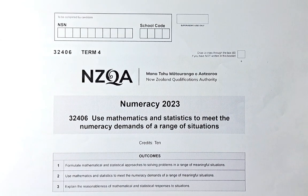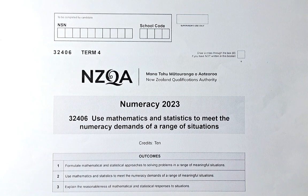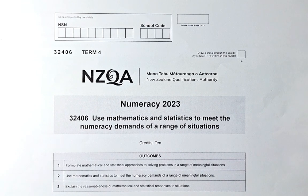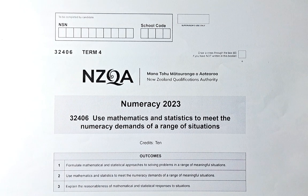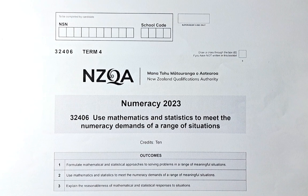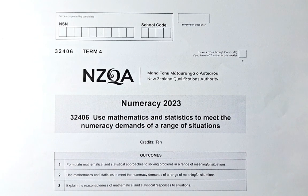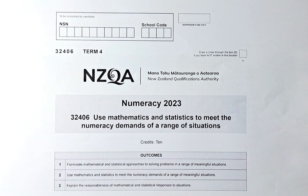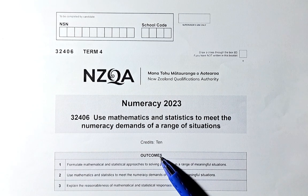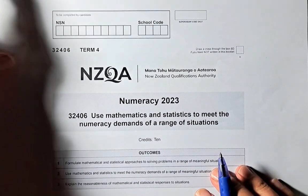Good day! In this video, we are going to do the last question, question 5, of the 2023 November Numeracy Exam Papers. This paper is called 'Use Maths and Stats to Meet the Numeracy Demands of a Range of Situations.' The paper number is 32406 and it is a unit standard, so there is no merit or excellence — it is either achieved or not achieved. To get 10 credits for achieved, you need to have outcomes 1, 2, and 3. So without further ado, let's do question 5A.